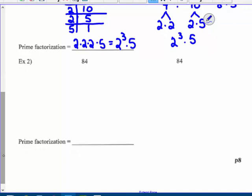So 84, using method 1, the inverted division of primes. 84, I know the smallest prime number, I always start with that, has a 2 in it. 2 times 42. 42 has a 2 in it. 2 times 21.